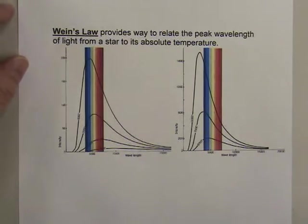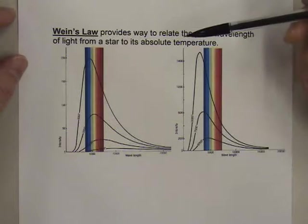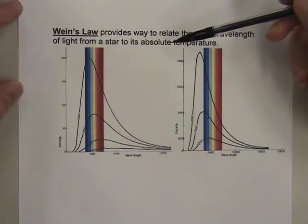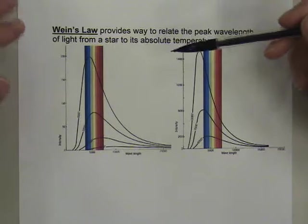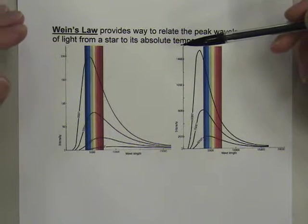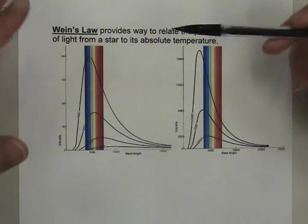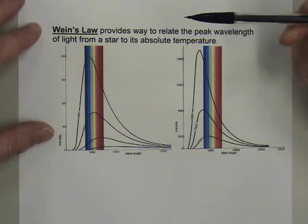Okay, our next topic is Wien's Law. And we already looked at this law when we were looking back at the climate change issue. And that is that the type of light, the type of radiation that is released by a star, or really any object for that matter, is dependent largely on its temperature.